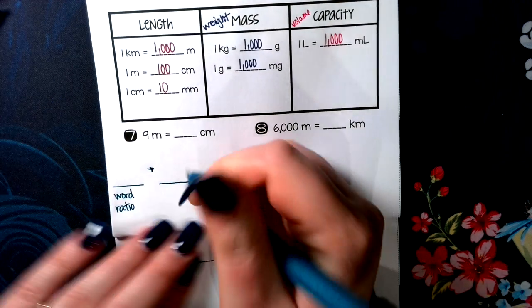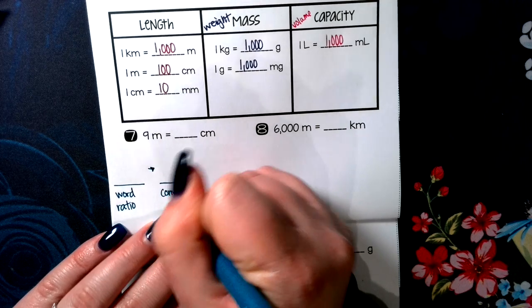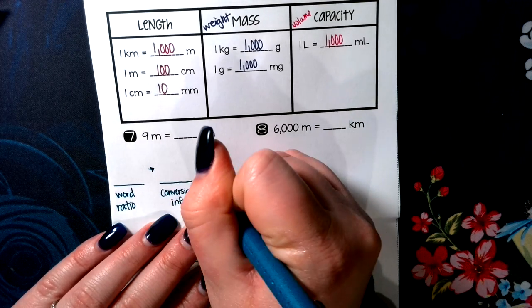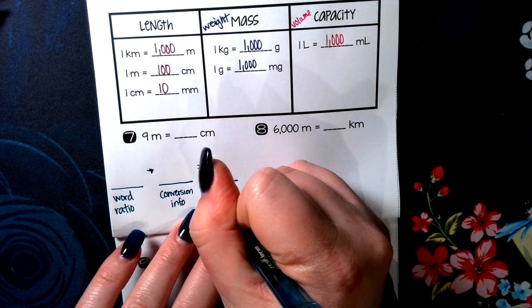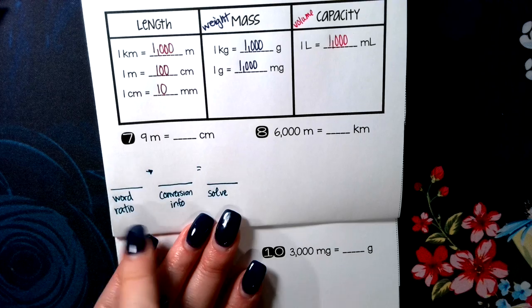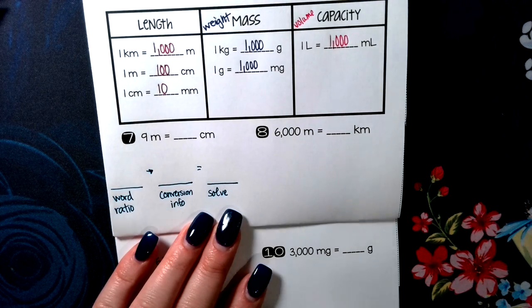And I want to compare that to the conversion information. And I want to set that equal to what I'm trying to solve for.